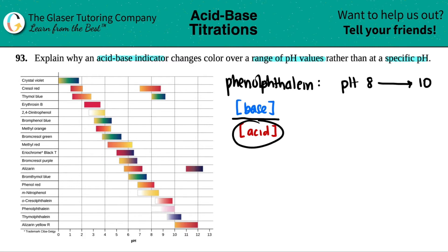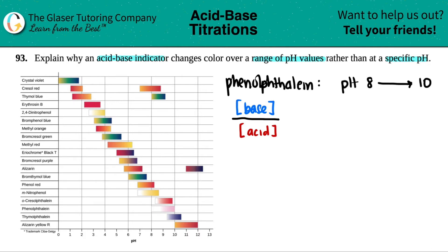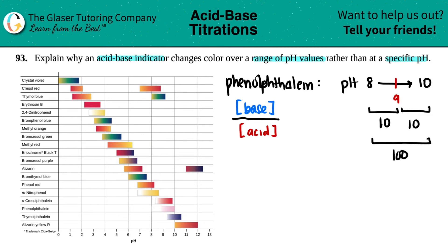If you increase the amount of acid and have less base, your pH is going to be closer to the 8 side. Keep in mind that pH values are expressed in terms of powers — every time you go up one number, it's a power of 10. So from 8 to 10, you're talking about a 100 times difference in concentration between the base and the acid.